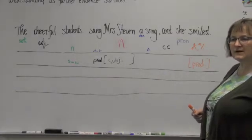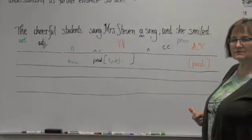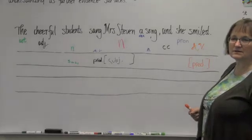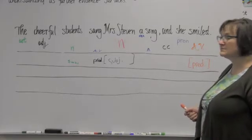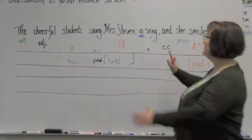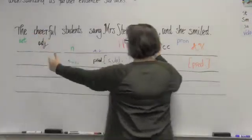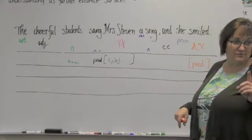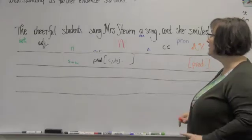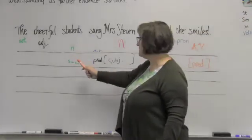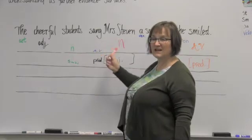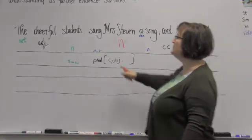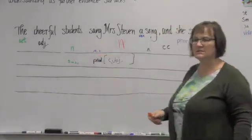How many clauses do you think we have in this sentence? Two. Okay. Can somebody find the first one? It will be the cheerful students sing Mrs. Steven a song, and she smiles. Okay. So if this is the first clause, how many subject predicates do we need in the first clause? One clause will have one subject, one predicate. Okay. And in that clause you just identified, we have two subjects and a predicate. Is this a compound subject? Is that what's happening here? Did two people do the action? Well, more of them.